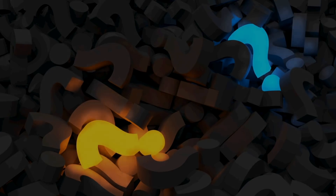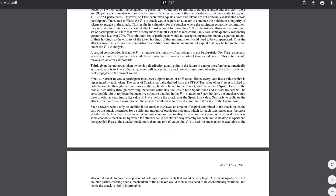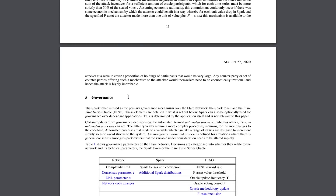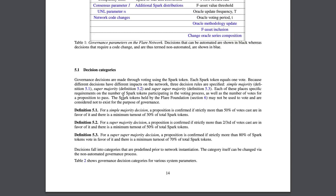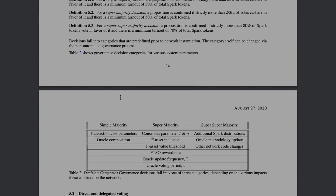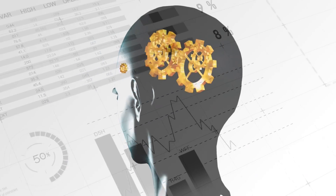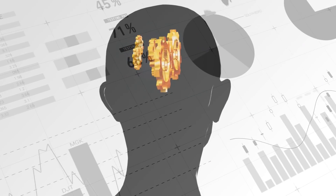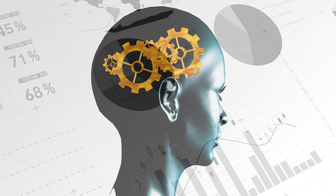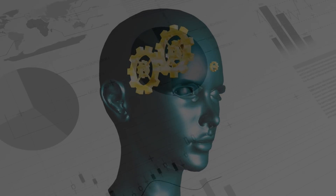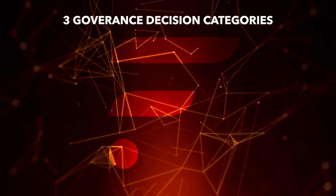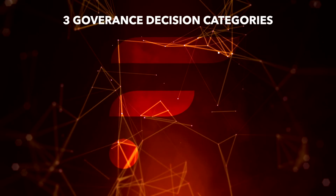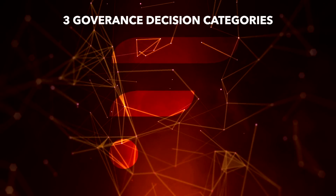So what can we actually vote on? If you look at the Flare network white paper, which you can find linked in the description, you can find out everything you need to know. Let's begin by understanding that decisions can be made without everyone agreeing. In fact, there are three different categories in which decisions are made, each with their own unique criteria.